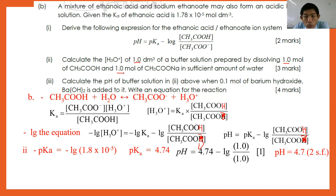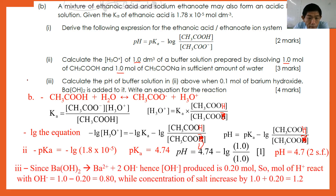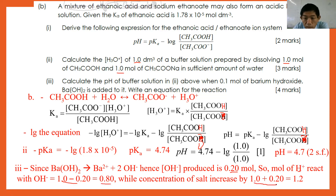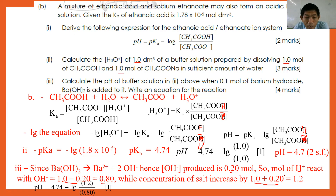For number three: calculate the pH when 1.0 mol of barium hydroxide is added. Since Ba(OH)2 → Ba²⁺ + 2OH⁻, the moles of OH⁻ produced will be 0.2. So moles of CH3COOH remaining = 1.0 − 0.2 = 0.8, and moles of CH3COO⁻ become 1.0 + 0.2 = 1.2. Reapplying the equation: pH = 4.74 − log(1.2/0.80), giving pH = 4.9 to two significant figures.